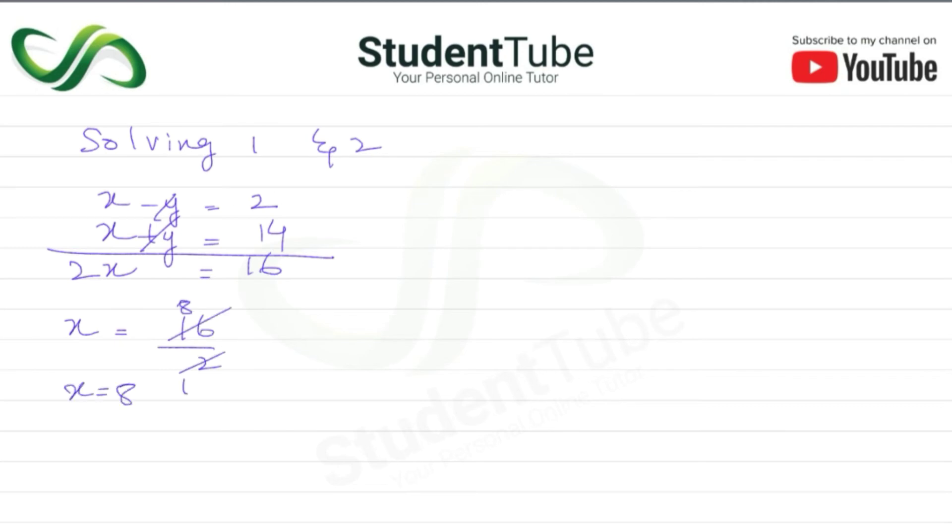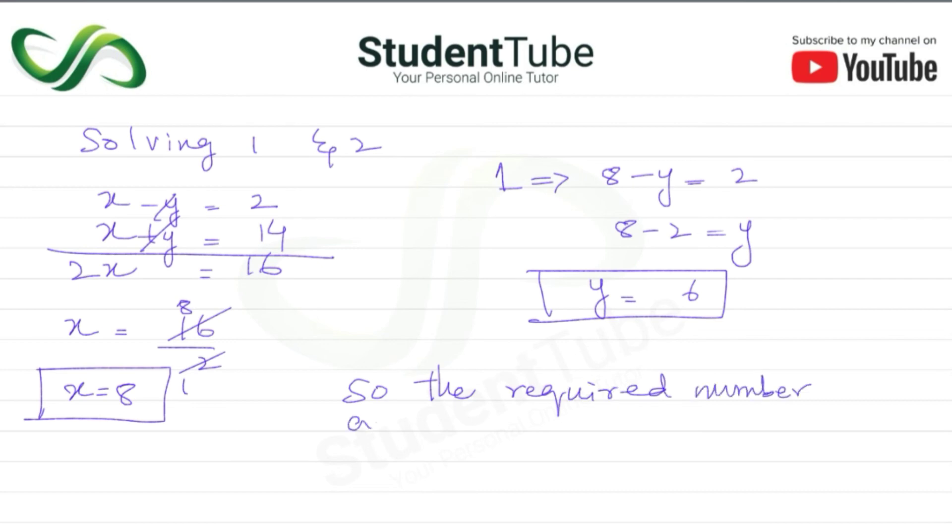X ki value kai 8. Ab equation 1 ke andar hum 8, x ki jagah aya, minus y is equal to 2. So 8 minus 2 is equal to y. So y is equal to 6. So x jo hai vo bada hai, y chhota hai. So the required number are 6 and 8. Answer.